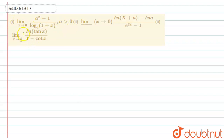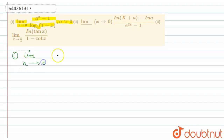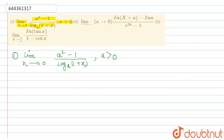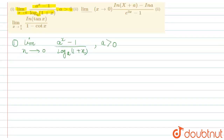In this question there are three parts and we have to solve them one by one. The first part says: limit x tends to zero, a raised to the power x minus one upon log base a of one plus x, where a is greater than zero.